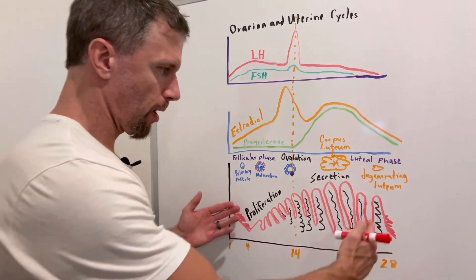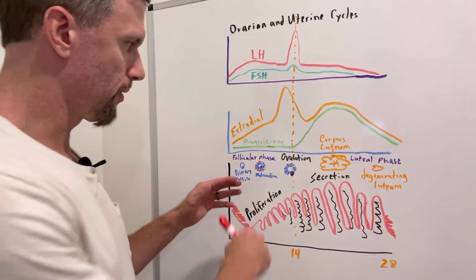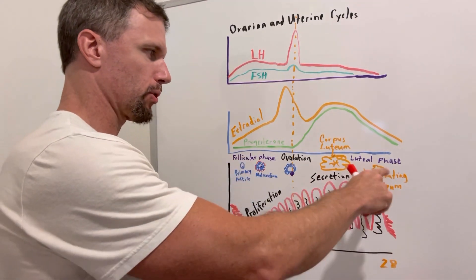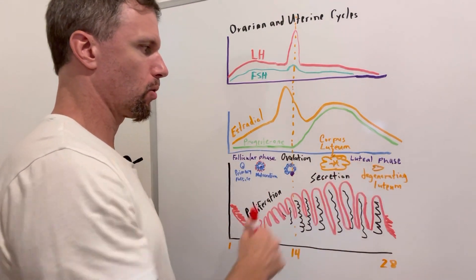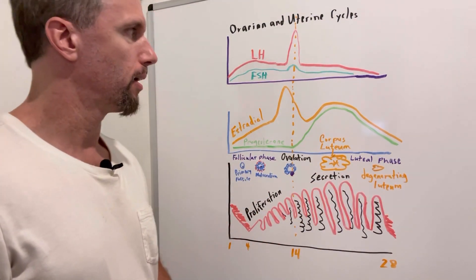So this is representing the uterine cycle. This is the uterus, the endometrium, the inner part of the uterus. This is the ovarian cycle here, what's going on with the ovary as far as the follicle and the egg and all that, the ovum.